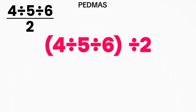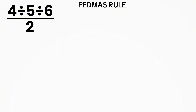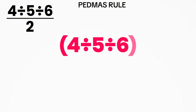According to the PEMDAS rule, we first solve whatever is inside the parentheses. So let's start with 4 divided by 5 divided by 6. Work inside the brackets. First, 4 divided by 5 equals 4 over 5. That's a fraction.